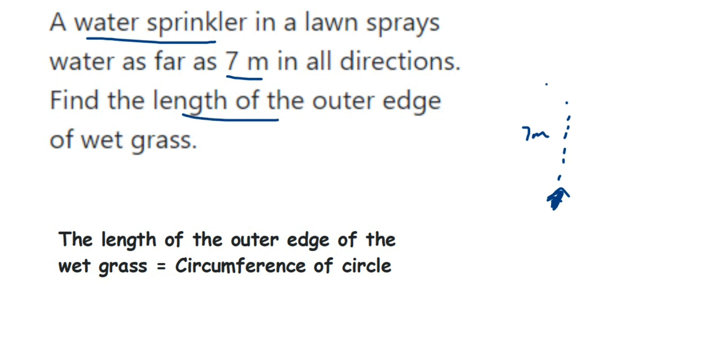So let me redraw this. If here this is a sprinkler at the center, when it sprinkles, it's 7 meters distance. So this will be the shape we're going to get. We have to find out the outer edge, which means the circumference of this circle.